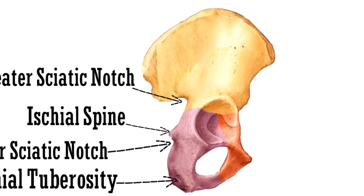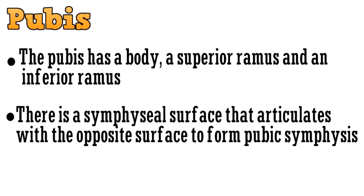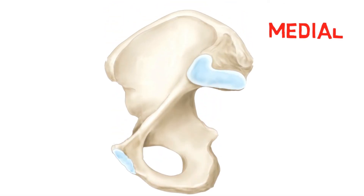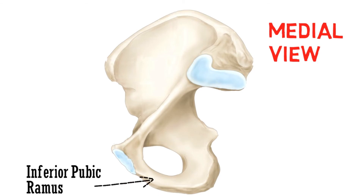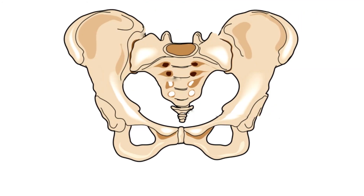With this we complete the ischium and move to the last part, the pubis. The pubis has a body, a superior ramus, and an inferior ramus, and there is a symphysial surface that articulates with the opposite surface to form the pubic symphysis. This is the inferior pubic ramus, and above this is the superior pubic ramus. This surface is the symphysial surface that forms the pubic symphysis.